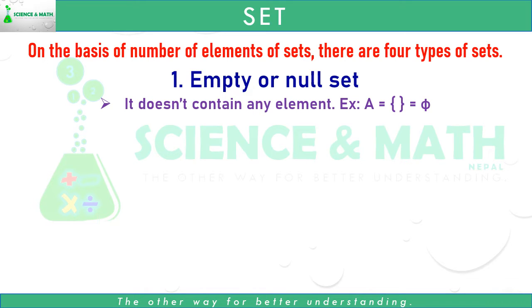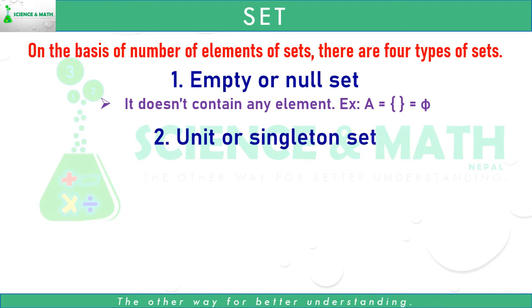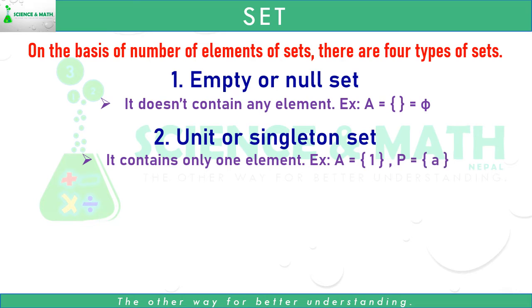It is denoted by ∅. Number two: unit or singleton set. Unit or singleton set contains only one element. For example, A equals the set of 1; B equals the set of A.